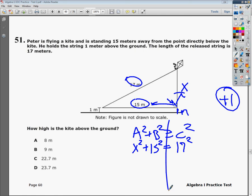15 squared is 225. 17 squared is 289. In order to get rid of the plus 225, because I'm trying to get x by itself, I need to subtract 225 from 289, and it gives me x squared is equal to 64.